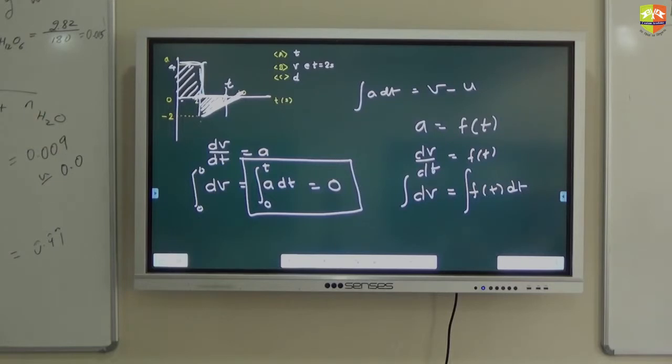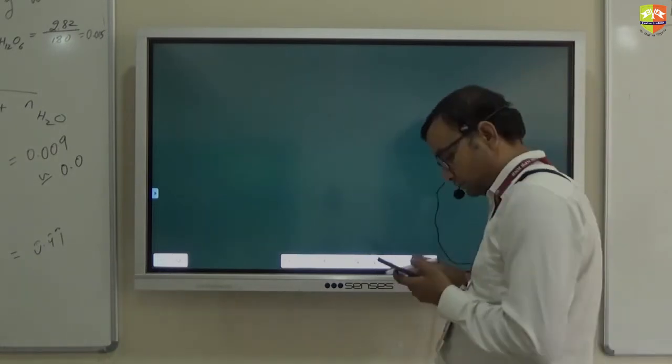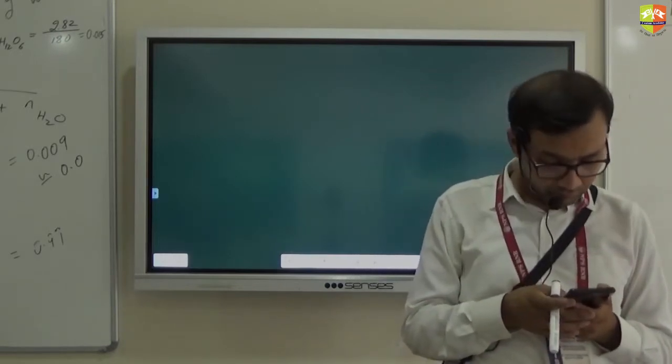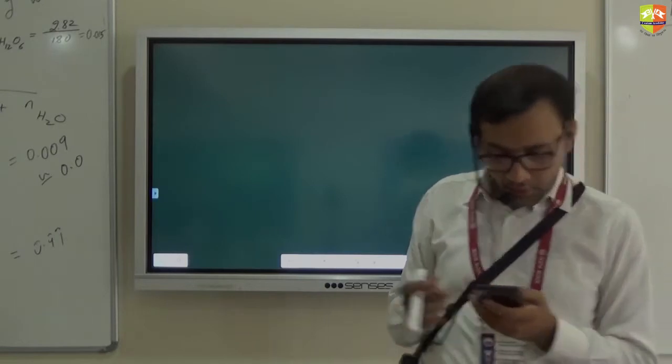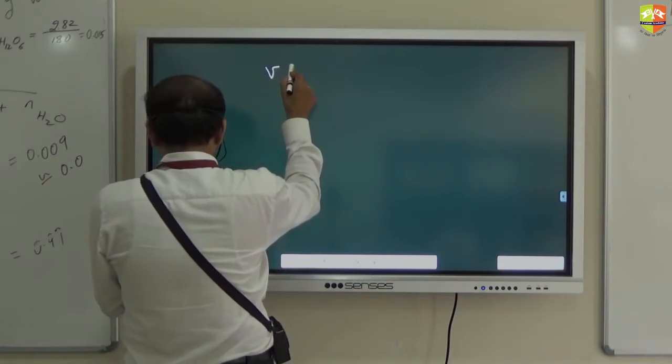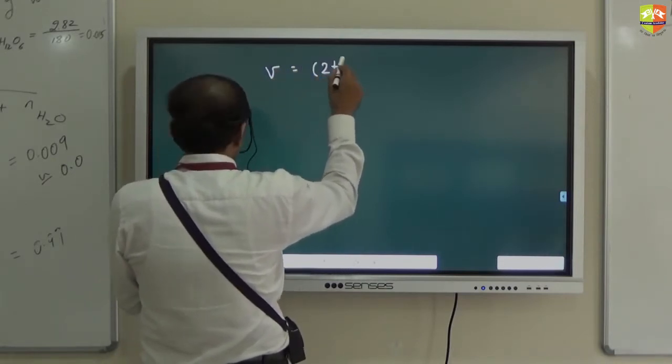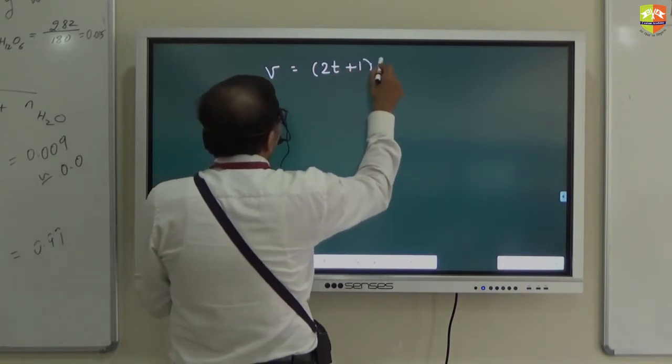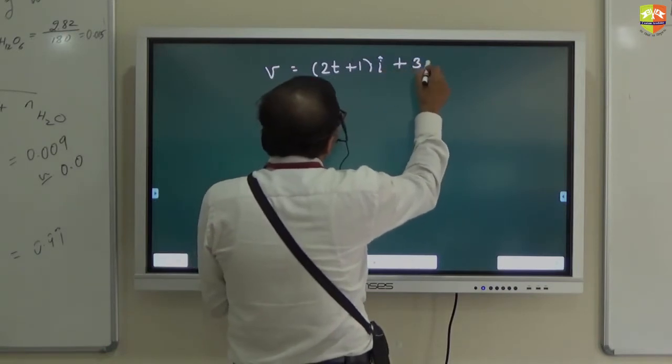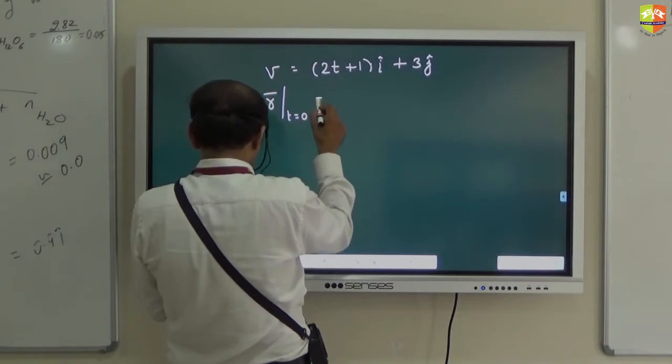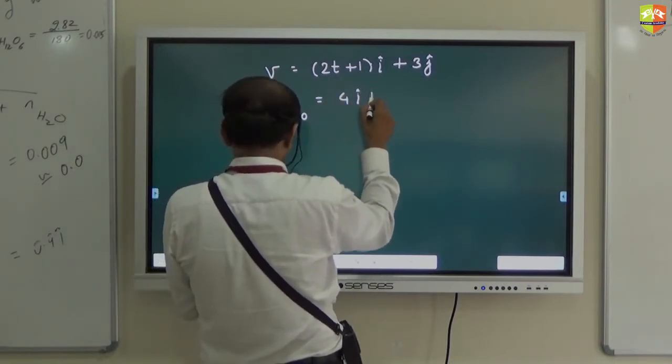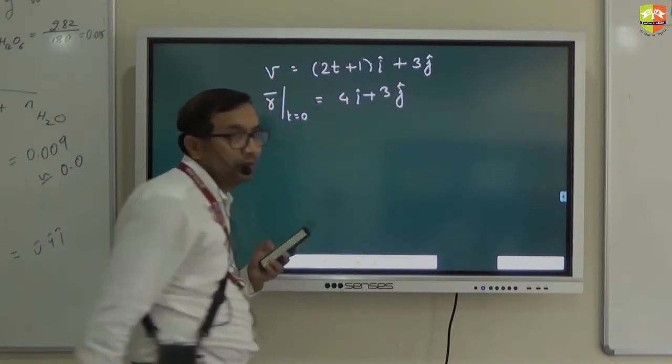Okay. Stop. Focus here. Here is the question. All of you. If velocity is 2t plus 1 i cap plus 3j cap. This is the velocity vector. And position vector r at t equal to 0 is given as 4i plus 3j.